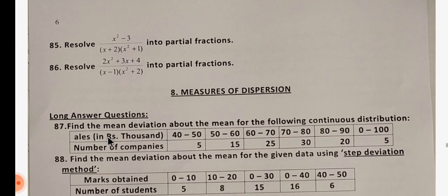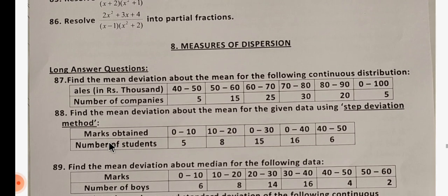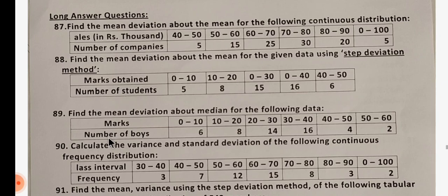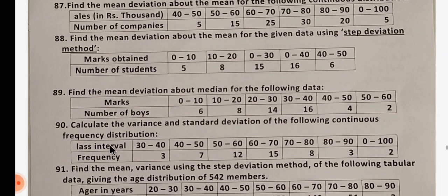Next, the measures of dispersion. We will start with 87, 88, 89, 90, 91. Okay.